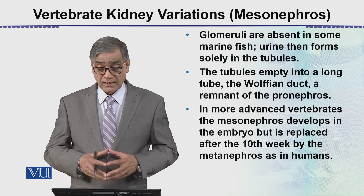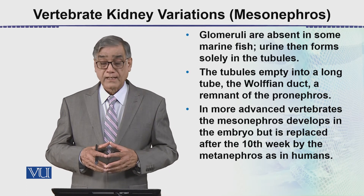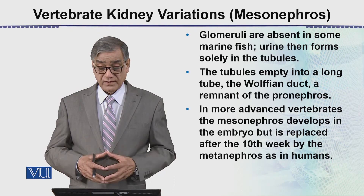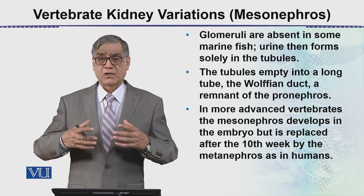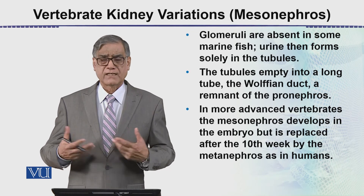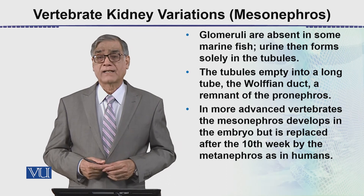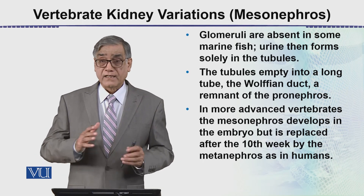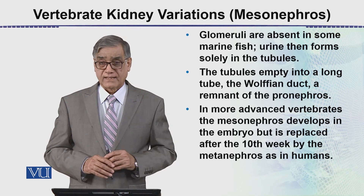Now in some advanced vertebrates, the mesonephros develops in the embryo but is replaced after the tenth week by the metanephros, as in humans۔ Human کے اندر pronephros بہت early condition میں بنتا ہے، it is about the tenth week, and then it starts shaping into the metanephros which is the adult kidney۔ So this is the intermediate stage between pronephros and metanephros۔